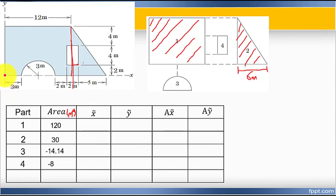Now let's find the x and y coordinates. For shape one, from origin, how much distance to the center of shape one? I have to go 12 divided by 2, therefore 12 divided by 2 equals 6 meters from origin to center of shape 1.